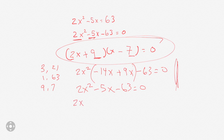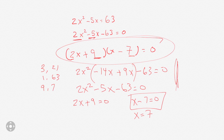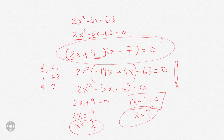Now we set each factor to 0. We get 2x plus 9 equals 0 and x minus 7 equals 0. For x minus 7 equals 0, we add 7 to each side so x equals 7 — that's one answer. Then for 2x plus 9 equals 0, we get 2x equals negative 9, so x equals negative 9 halves. Those are the two answers for that one. If you want, you could plug them into the original equation and it will work out.